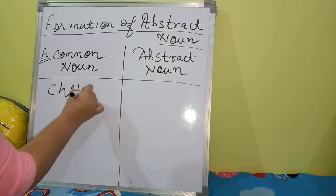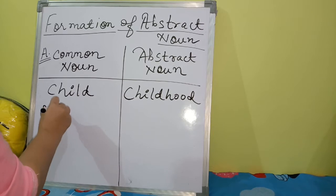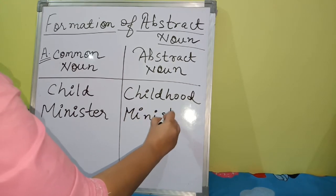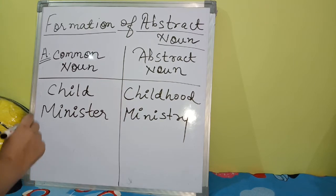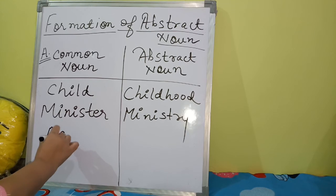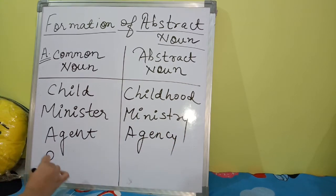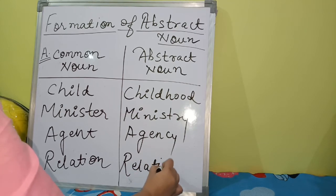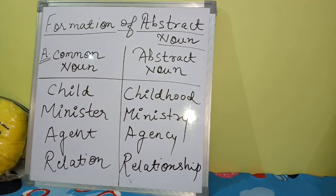From 'child' we get 'childhood.' From 'minister' we get 'ministry.' From 'agent' we get 'agency.' From 'relation' we get 'relationship.' So these are some words that were common nouns from which we have formed abstract nouns.